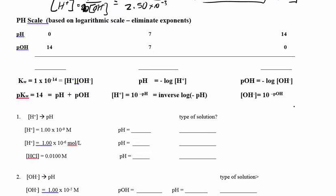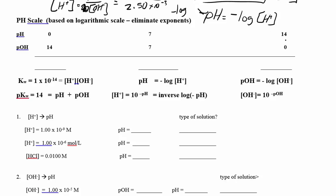A pH scale is a logarithmic function that eliminates the exponent notation. pH is the negative log of your hydrogen concentration. 'P' means negative log — put that in your brain. So pH means negative log of H; pOH means negative log of OH. When you take the log, you get rid of the exponents: instead of 1×10⁻⁷, you just have 7.